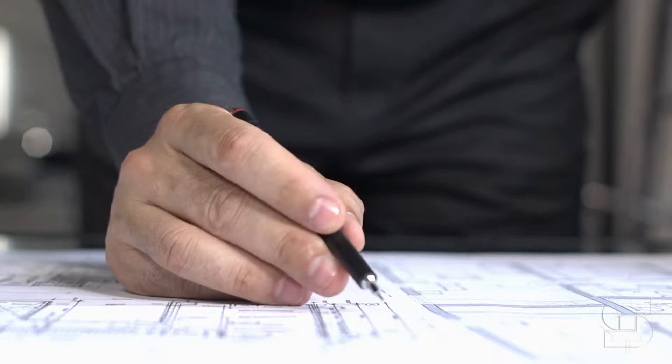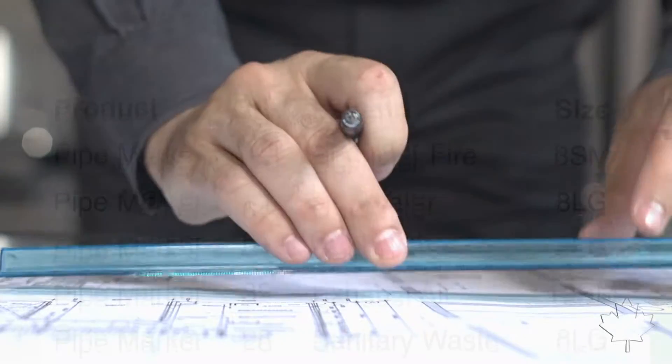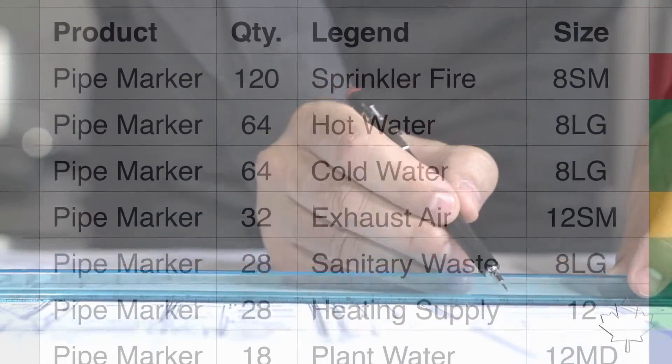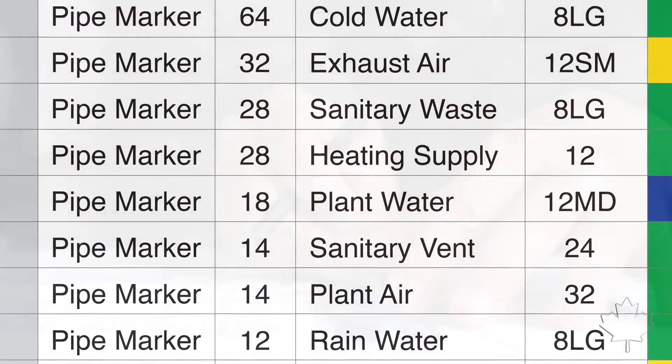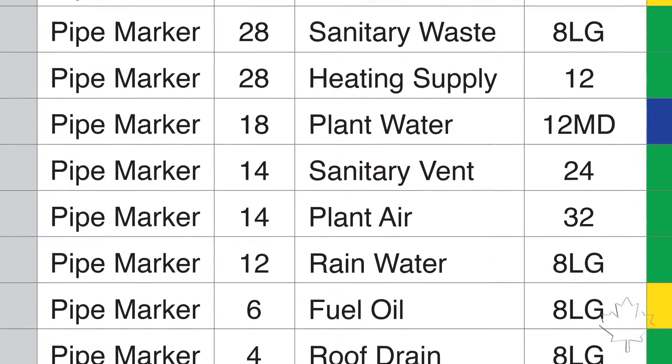For no added cost, our pipe and valve marking experts will carefully review your facility's mechanical drawings and provide you with a comprehensive bill of materials containing all of the items that you'll need in order for your project to fully meet CSA and ANSI requirements.